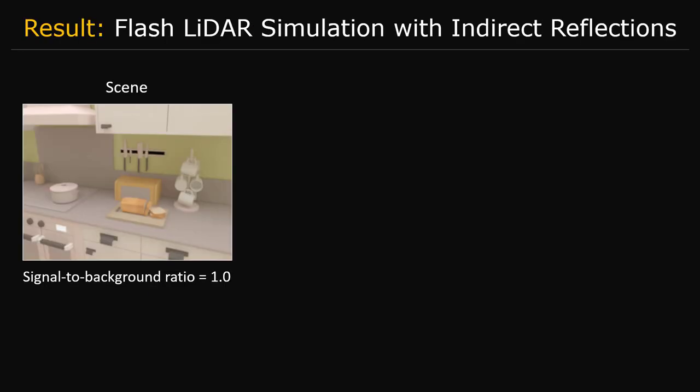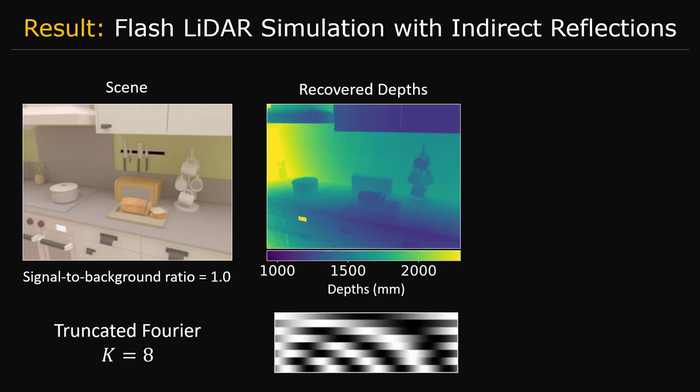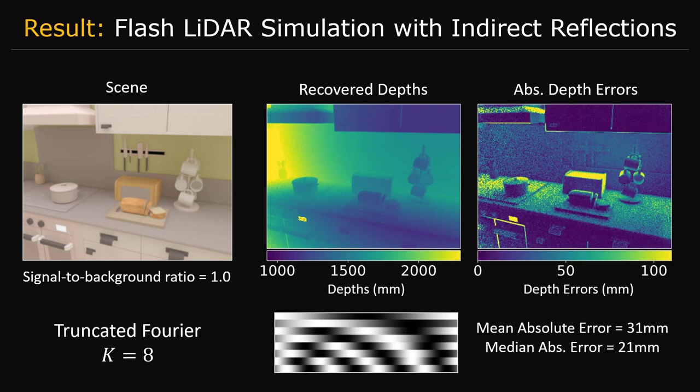Now, let's consider a flash LIDAR scenario where we capture the following scene. If we compress the timestamp data using a truncated Fourier matrix, we obtain the following depth image. Although the depth image looks reasonable, if we look at the depth errors, we find that the recovered depths have significant systematic errors due to indirect light reflections from other points.